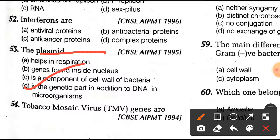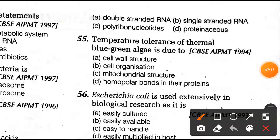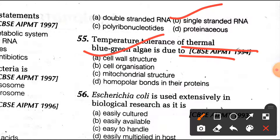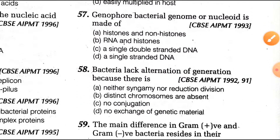Question number 53: the genetic material in tobacco mosaic virus is option B, the right answer: single stranded RNA. Question number 54: temperature tolerance of thermal blue-green algae is due to cell wall structure. Question number 56: bacteria are used extensively in biological research because they are easy to cultivate and culture. Option A is the right answer.